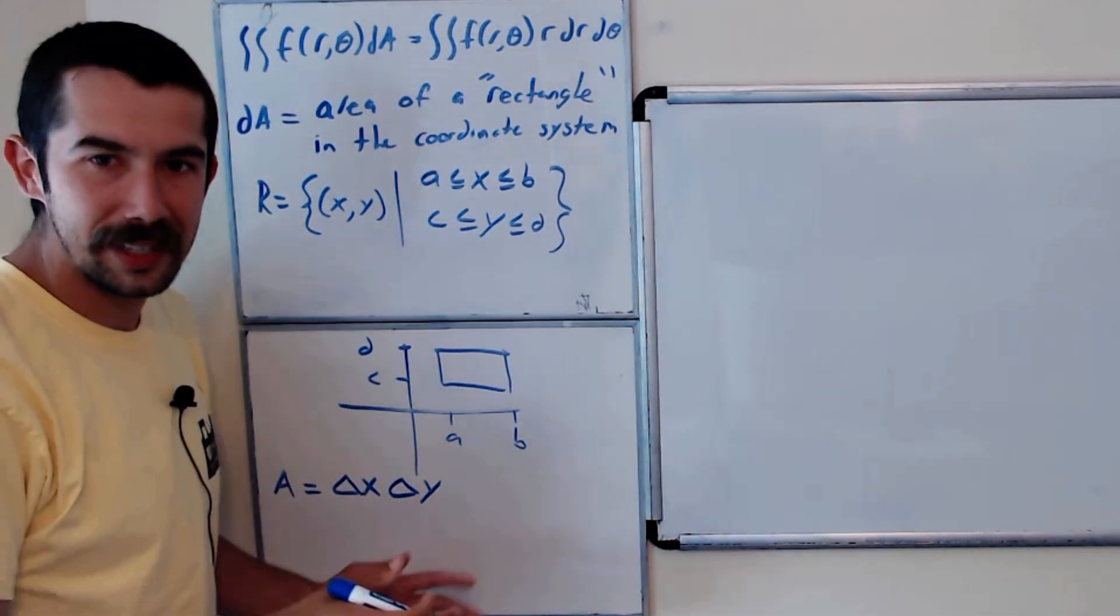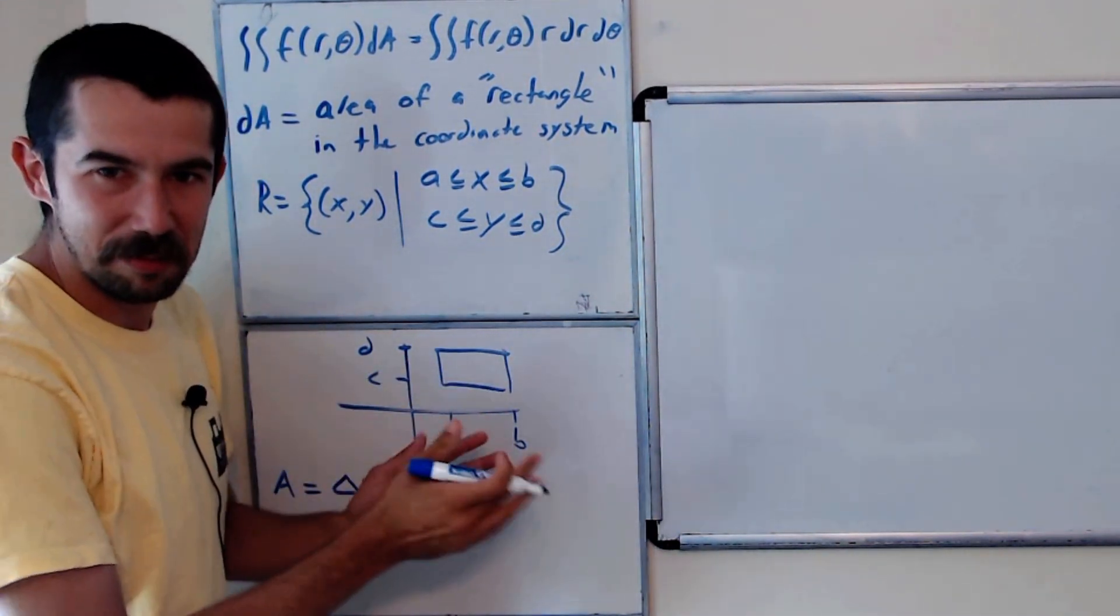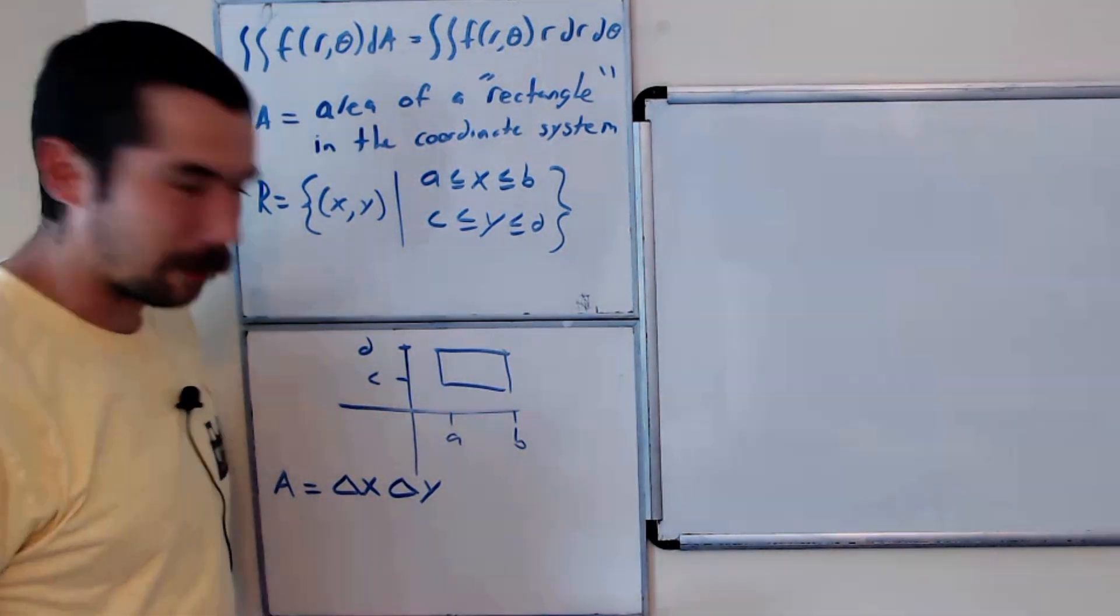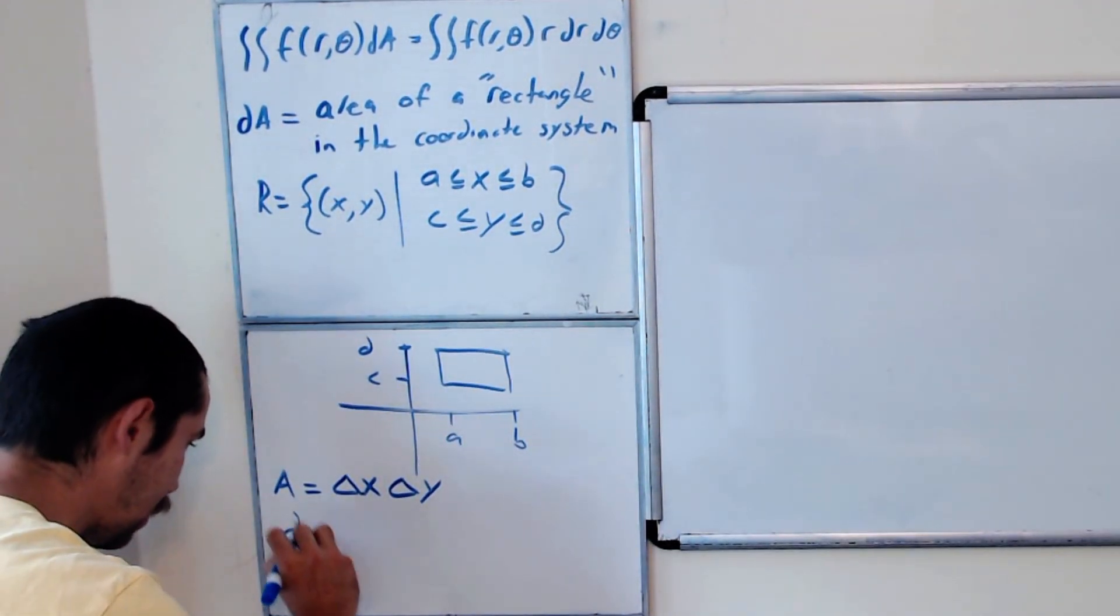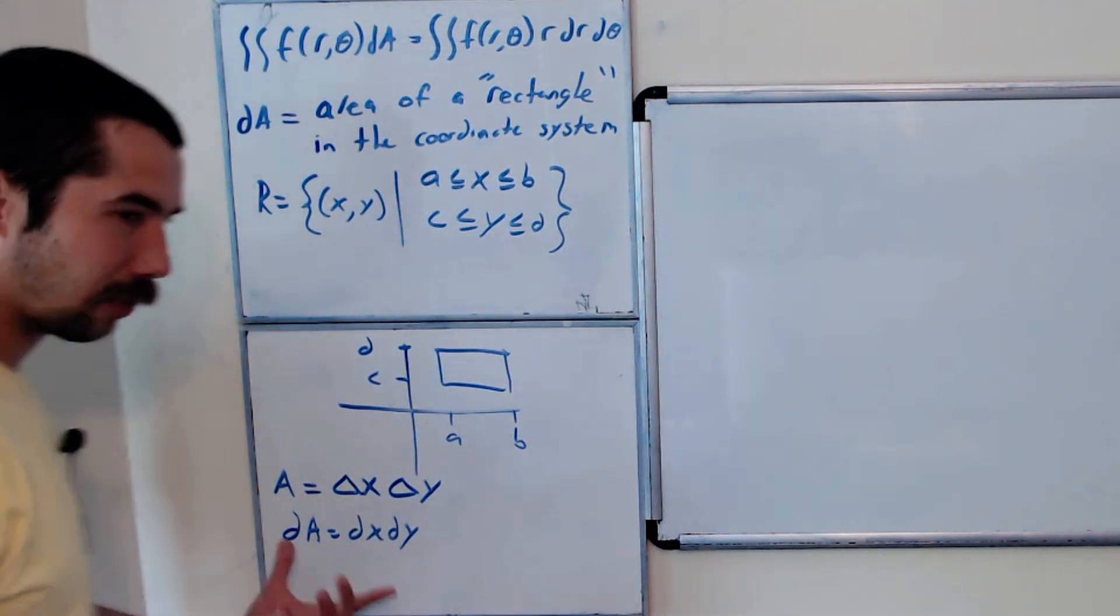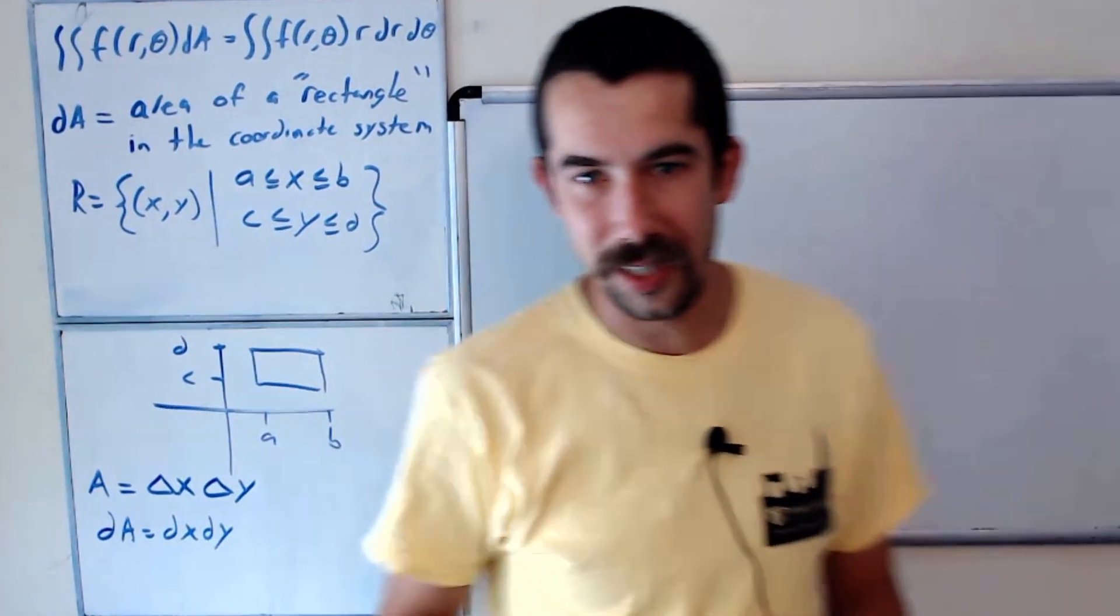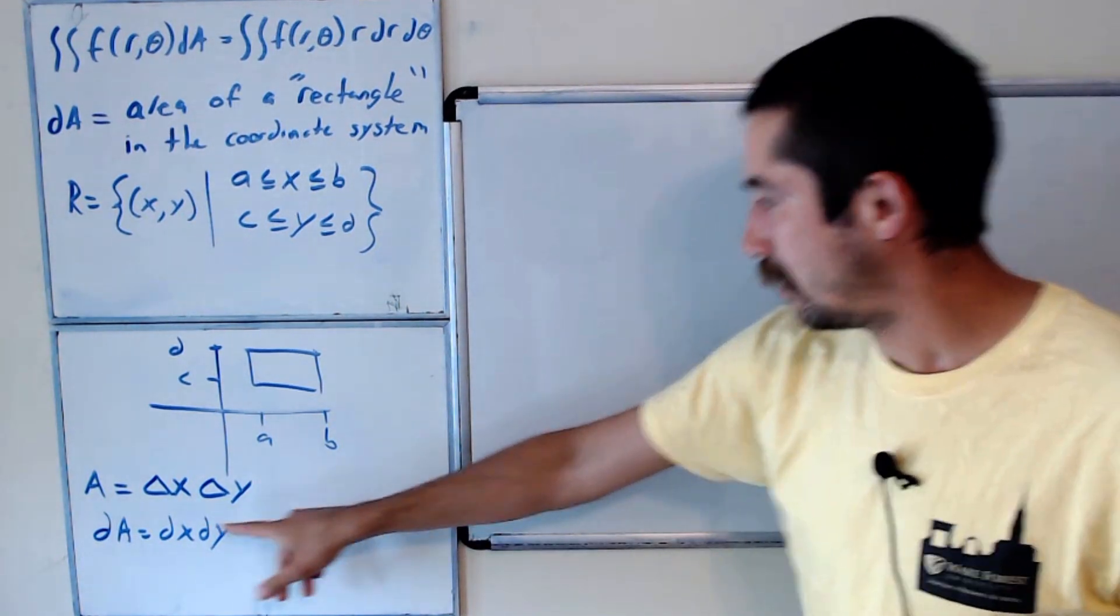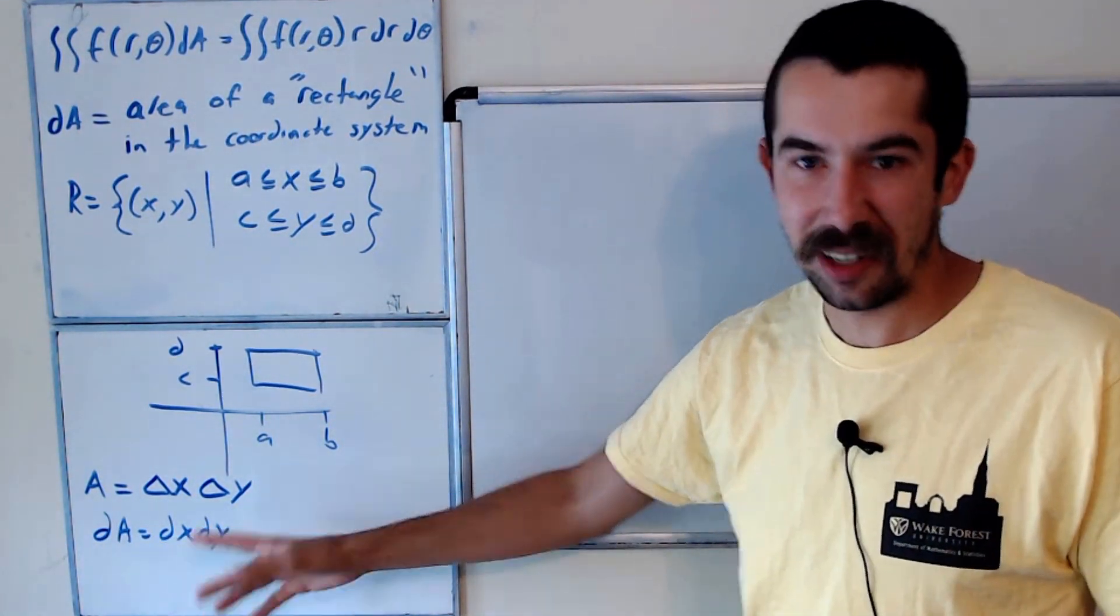And then when you take the limit as this rectangle gets small, so there's some limit you would take, this becomes dA equals dx dy. So if you're in the Cartesian coordinate system, dA is just dx dy, nothing crazy happens.